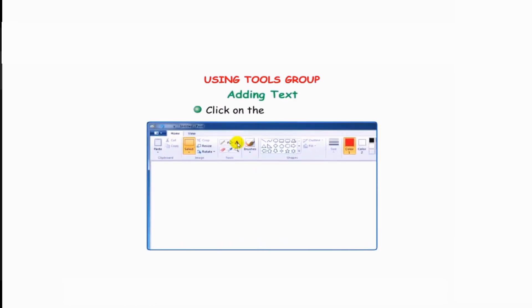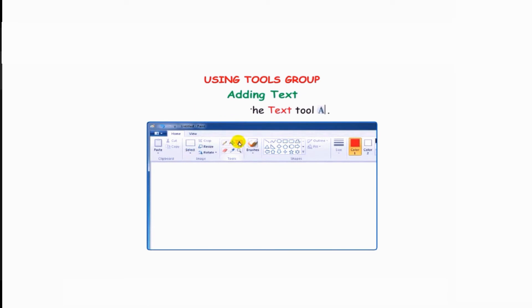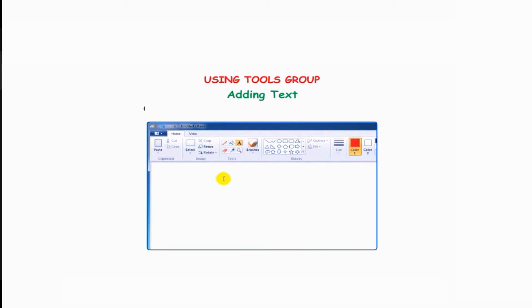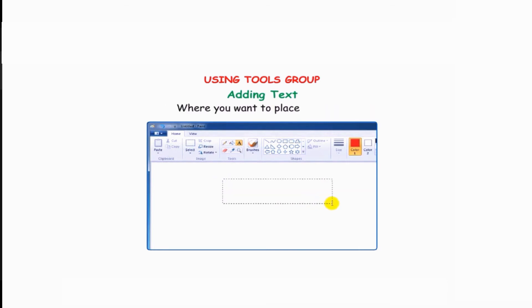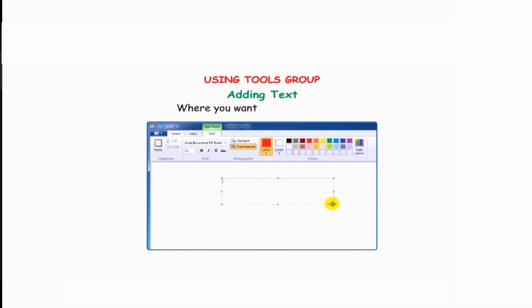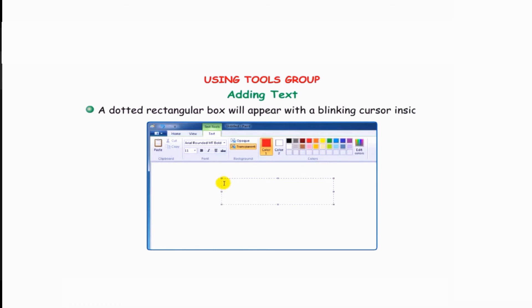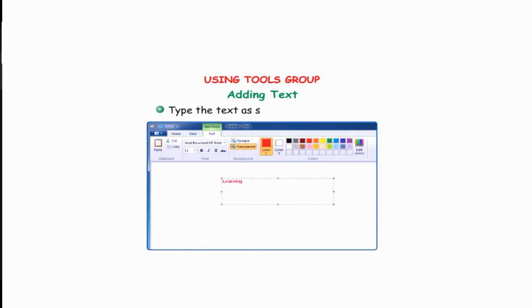Adding text: click on the text tool. The pointer changes to an eye shape. Click and drag the pointer on the drawing area where you want to place the text. A dotted rectangular box will appear with a blinking cursor inside it. Type the text as shown in the text box.